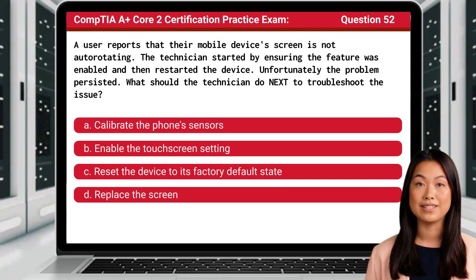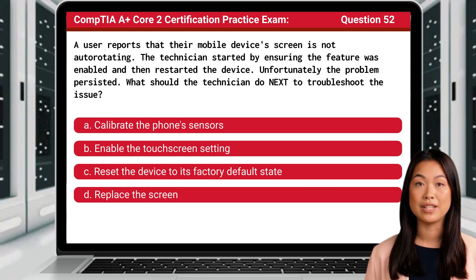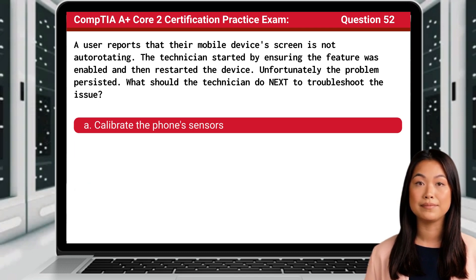Question 52: A user reports that their mobile device's screen is not auto-rotating. The technician started by ensuring the feature was enabled and then restarted the device. Unfortunately, the problem persisted. What should the technician do next to troubleshoot the issue? The answer is A: calibrate the phone sensors.